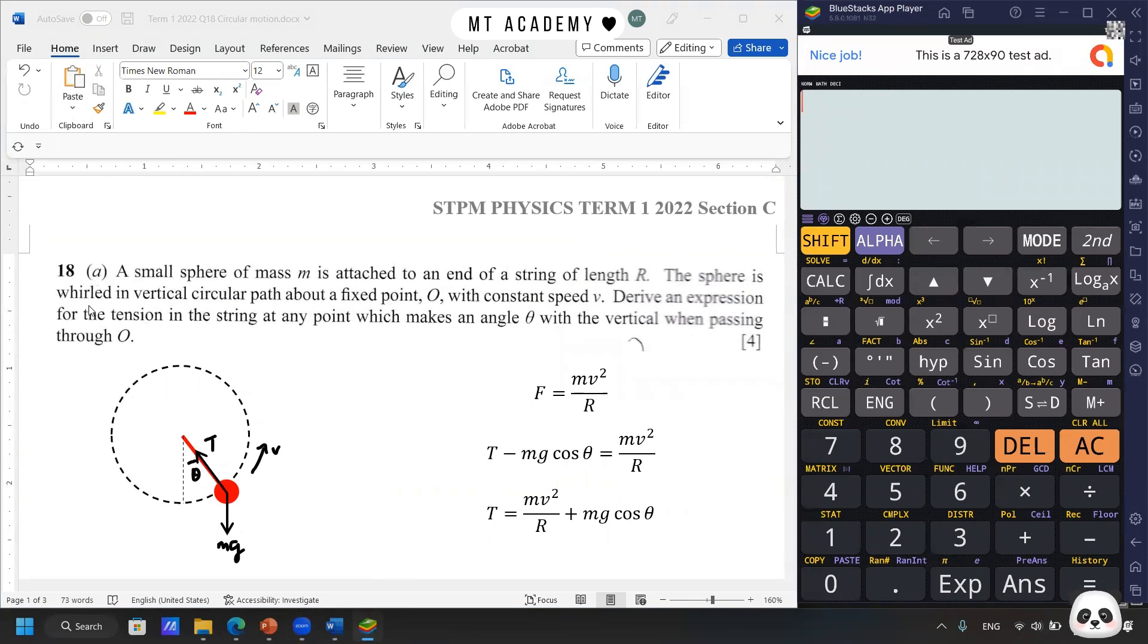This is about circular motion. A small sphere of mass is attached to an end of a string with length R. The sphere is rolled in a vertical circular path about a fixed point with constant speed. I mentioned about this, there are probably two cases of vertical circular path. One is constant speed means that we don't talk about conservation of energy. The linear speed is constant, so everything is almost constant all the way.